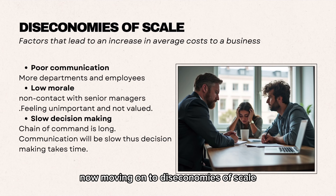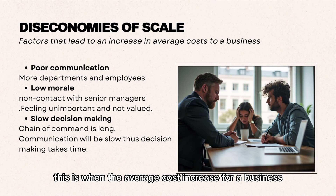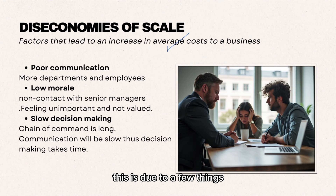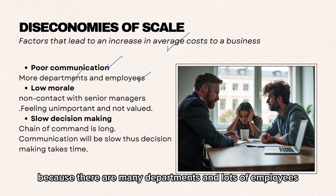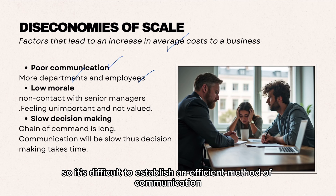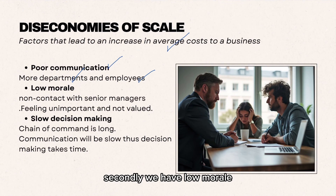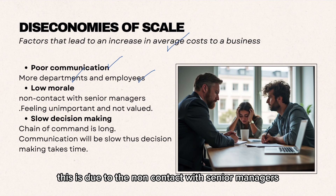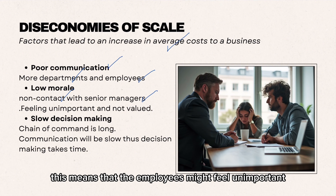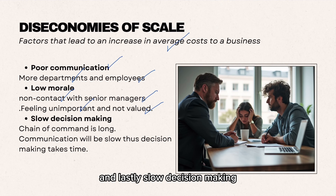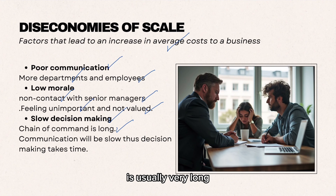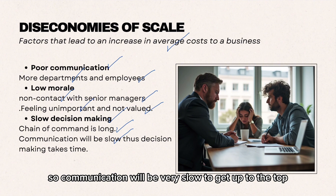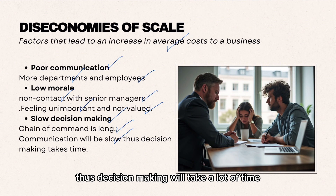Moving on to diseconomies of scale — this is when the average costs increase for a business. This is due to a few things. Firstly, poor communications, because there are many departments and lots of employees, making it difficult to establish an efficient method of communication. Secondly, low morale due to non-contact with senior managers, meaning employees might feel unimportant or not valued. And lastly, slow decision making, because the chain of command in very large businesses is usually very long, so communication is slow to reach the top, and decision making takes a lot of time.